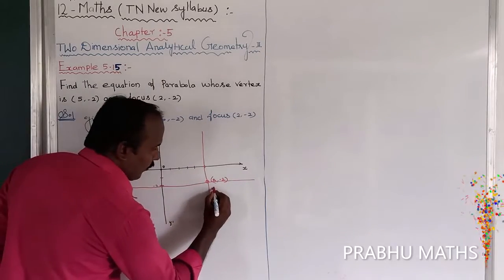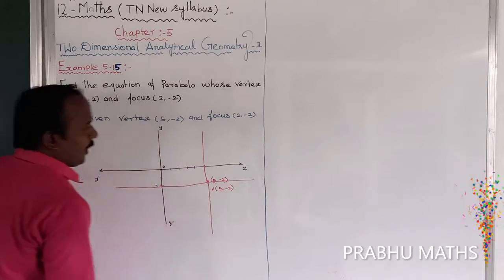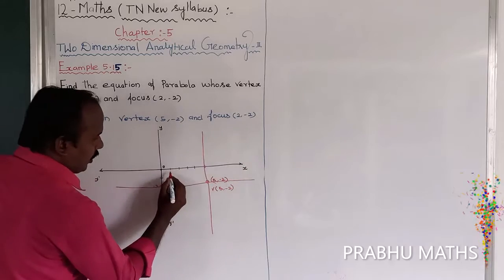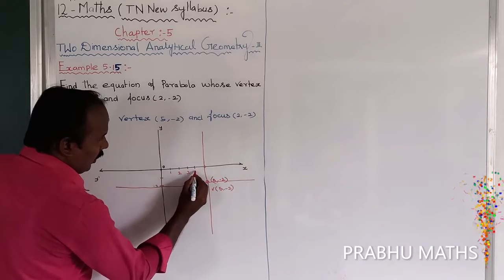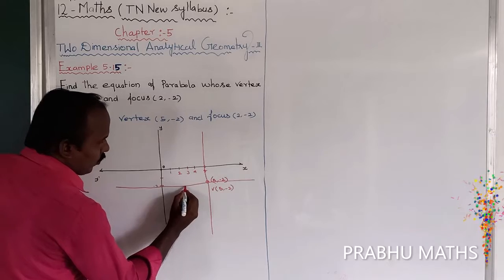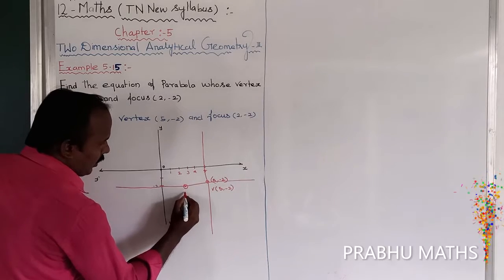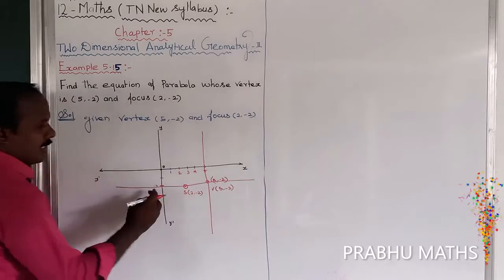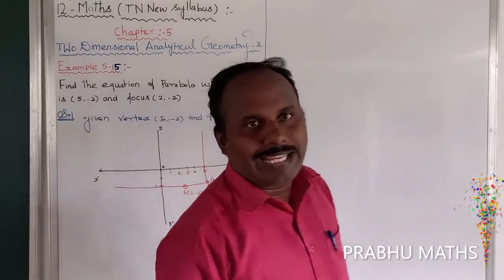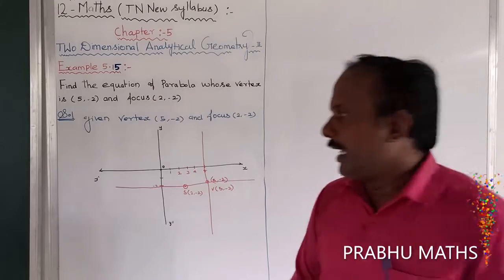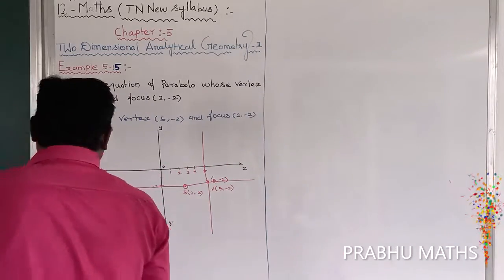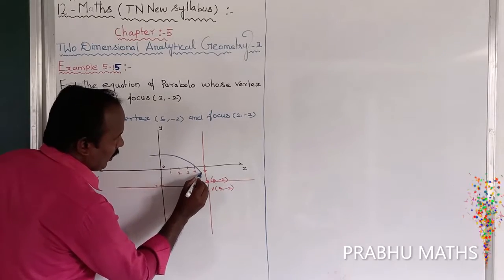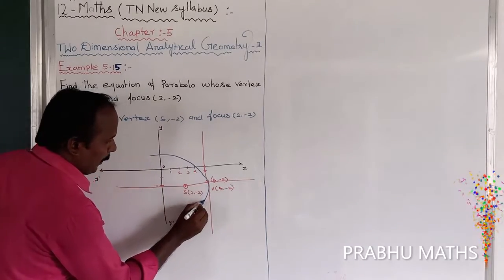The vertex point is (5, -2). Next, the focus is (2, -2) — counting 1, 2 along x and -2 along y. The focus is on the left side of the vertex, so the diagram is also left-side open.